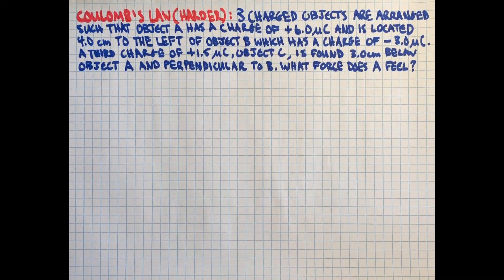Three charged objects are arranged such that object A has a charge of plus six microcoulombs and is located four centimeters to the left of object B, which has a charge of minus three microcoulombs.